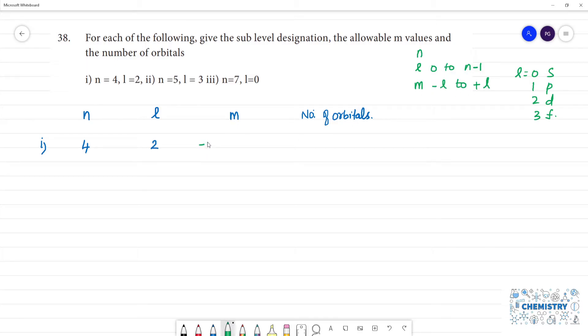Now m value: minus 2, minus 1, 0, 1, 2. So number of orbitals, 5 orbitals: 1, 2, 3, 4, 5 orbitals.